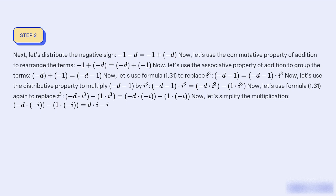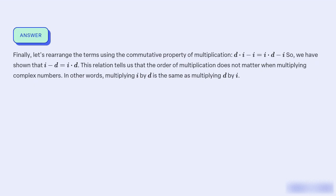Let's simplify the multiplication. −d × (−i) − 1 × (−i), which simplifies to d·i − (−i) × 1. This gives us d·i − i. Finally, rearranging using the commutative property of multiplication: d·i − i equals i·d − i.